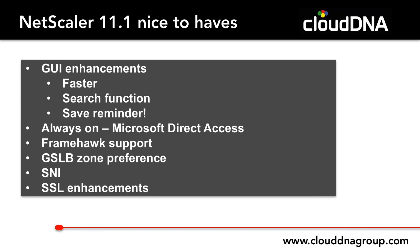For those on a fresh edition of XenApp and XenDesktop using FrameHawk, NetScaler now supports FrameHawk, which is a good thing. For users on particularly poor network services, FrameHawk can have quite a significant impact on experience. GSLB zone preference is something that larger organization customers have told us they like quite a lot.